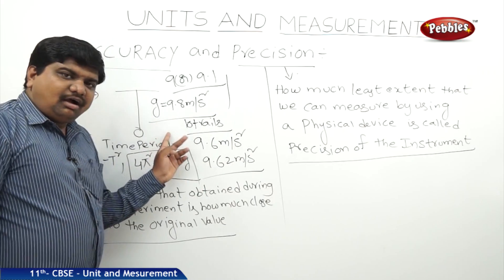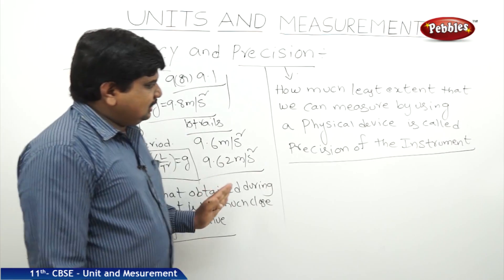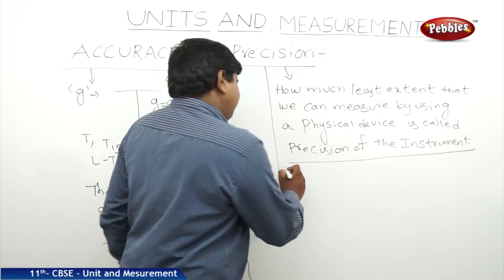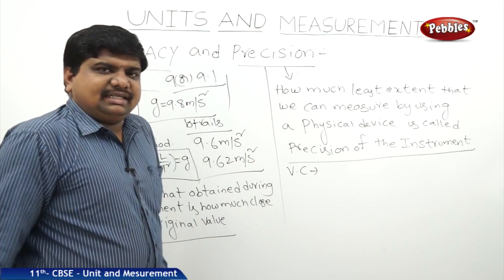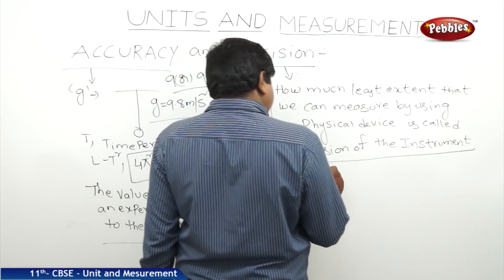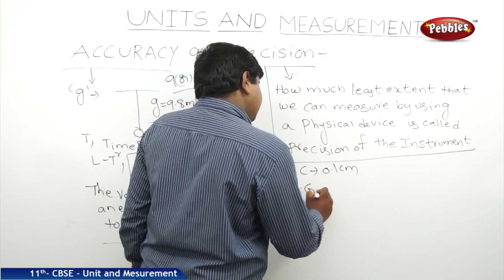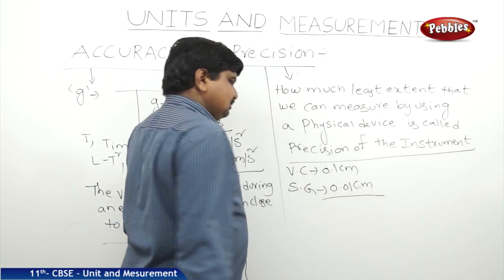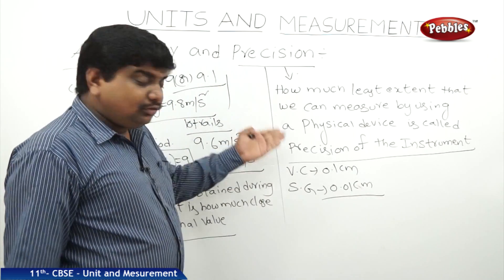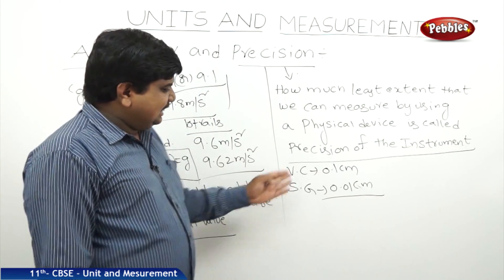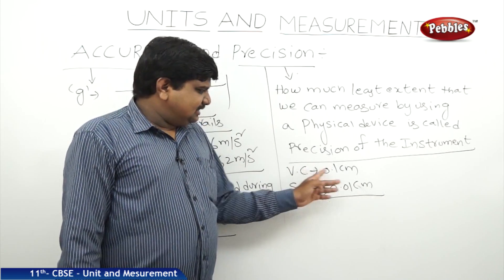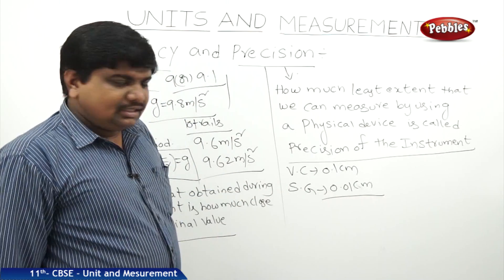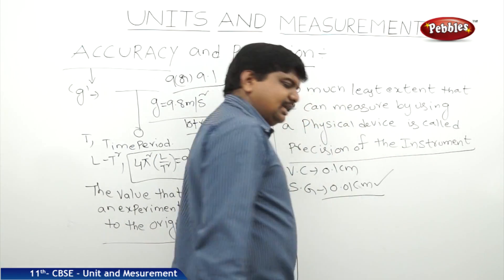The accuracy of an experiment can be improved by minimizing error through higher precision instruments. For example, a vernier caliper can measure up to 0.1 cm, while a screw gauge can measure up to 0.01 cm. Their ability to find the least values is increasing — the screw gauge can find values up to 0.01, so the screw gauge has the highest precision.